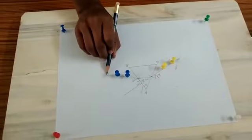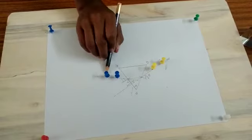On the angle of incidence line, we put another two pins labeled as C and D.